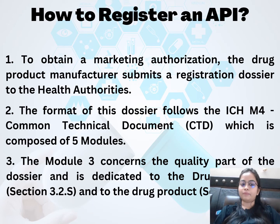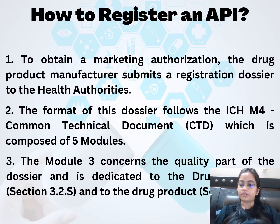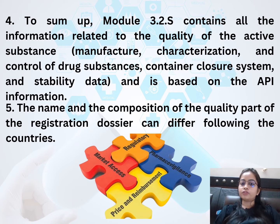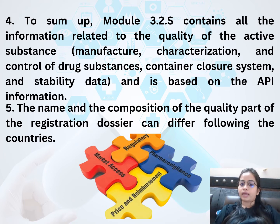Now, how to register an API. To obtain a marketing authorization, the drug product manufacturer submits a registration dossier to the health authorities. The format of this dossier follows the ICH M4 Common Technical Document, which is composed of five modules. Module 3 concerns the quality part of the dossier and is dedicated to the drug substance and to the drug product. To sum up, module 3.2 S contains all the information related to the quality of the active substance — manufacture, characterization and control of the drug substance, container closure system and stability data — and is based on the API information.